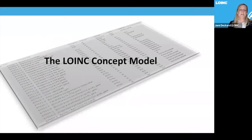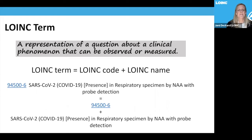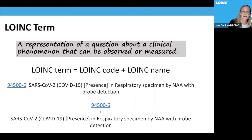Diving into the LOINC concept model: the LOINC term is the combination of the LOINC code and the LOINC name together, representing the question or observation about a clinical phenomenon that can be observed or measured. For example, 94500-6 is one of the most commonly used LOINC codes for SARS-CoV-2 testing. The full LOINC term is the code plus the long common name. Sometimes people refer to just the code or just the name, but we consider all of it together as the LOINC term.